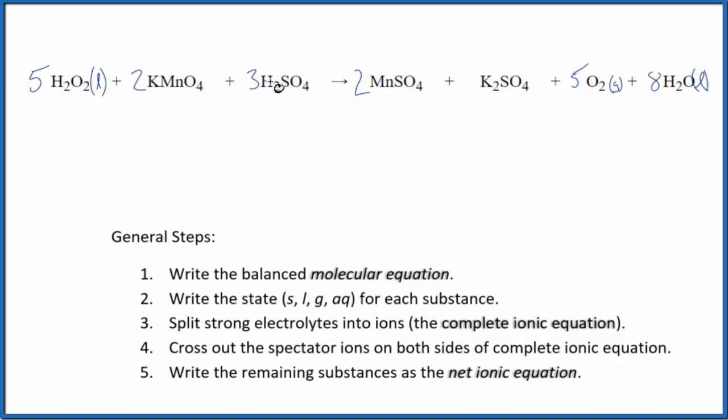So these are all strong electrolytes. Once we have our states, we can split the strong electrolytes into their ions. That's going to give us our complete ionic equation. We don't split up the liquids or the gases in net ionic equations. So we're just going to write 5H2O2. I won't write the states now. We'll write that later.